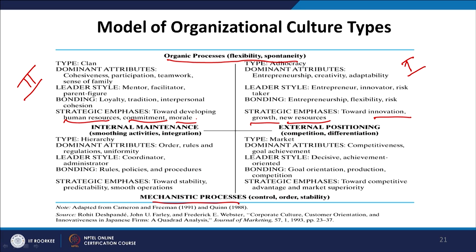When the culture is low on organic processes — that is, high on mechanistic processes — and also high on internal maintenance, the culture is called hierarchy. The dominant attribute is order, rules and regulations, and uniformity. Leadership style is coordinator and administrator. Bonding is through rules, policies, and procedures. Strategic emphasis is towards stability, predictability, and smooth operations.